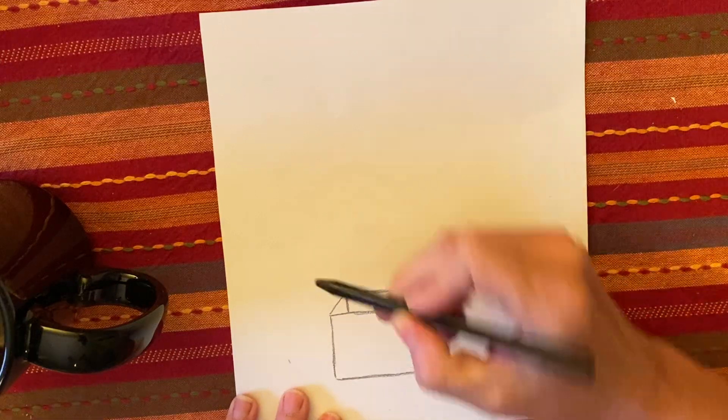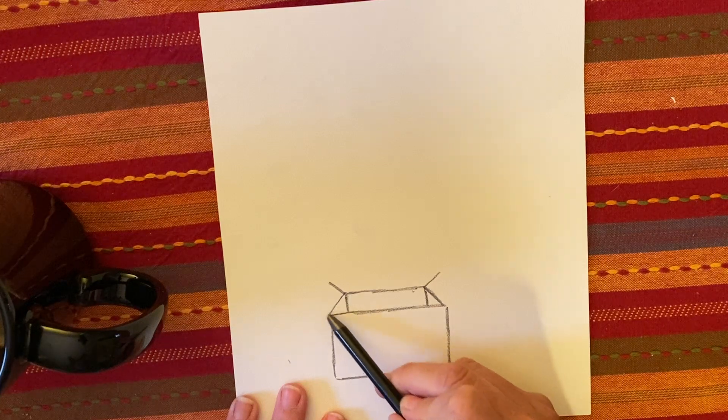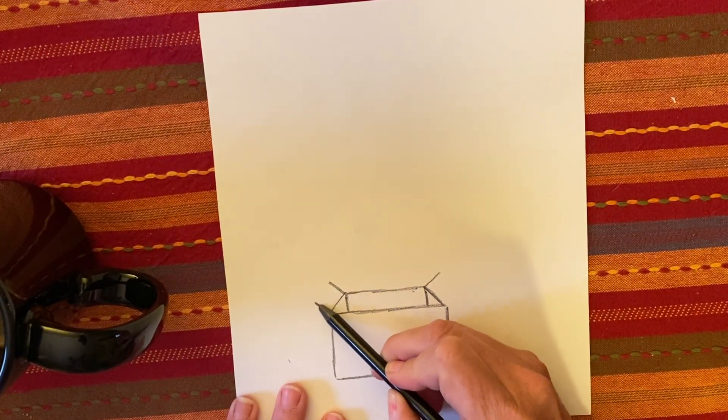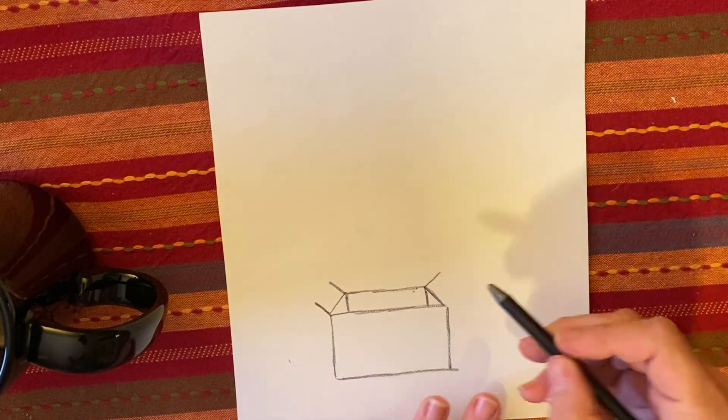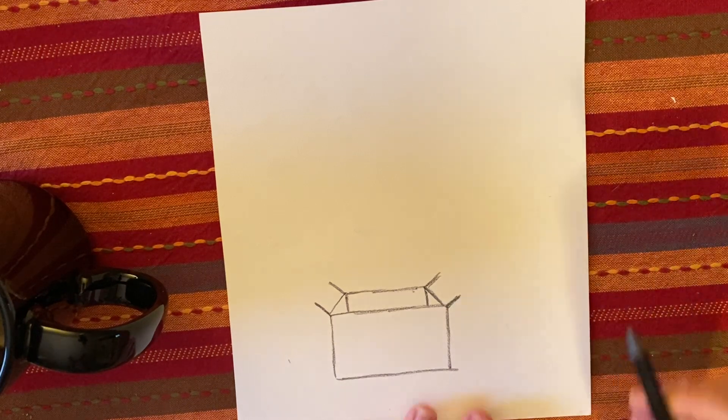The next step is to make about the same length as this line diagonal going out to the right over here, diagonal going out to the left and we're going to draw the same line so that it is parallel to here.